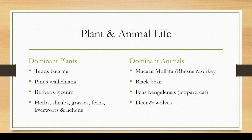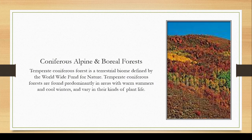The dominant plants in the temperate deciduous forest are Taxus baccata, Pinus wallichiana, Berberis lyceum, herbs, shrubs, grasses, ferns, liverworts, and lichens. The dominant animals inhabiting the temperate deciduous forest are Macaca mulatta — a rhesus monkey — black bear, Felis bengalensis — the leopard cat — deer, and wolves. A large variety of organisms inhabit the temperate deciduous forest, and some microorganisms along with bacteria, fungi, and earthworms are also present there.